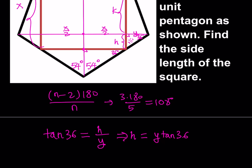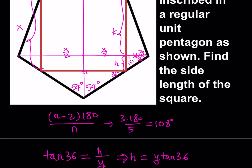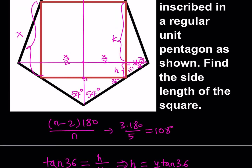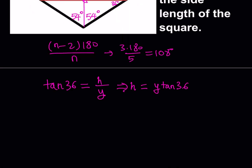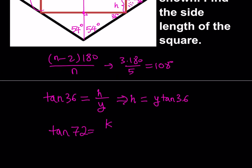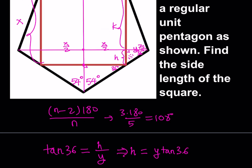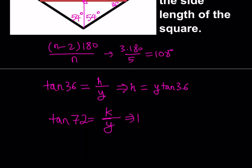How about k? Well, if this angle is 36 degrees, the other one needs to be 72 degrees because they add up to 108. So k can be written using tangent again, but this time tangent 72: tangent 72 equals k over y, because the opposite side is k and the adjacent side is still y. So k is equal to y times tangent 72.